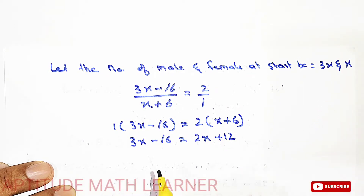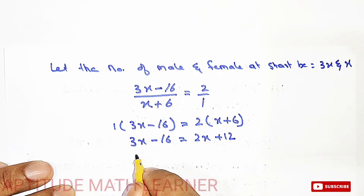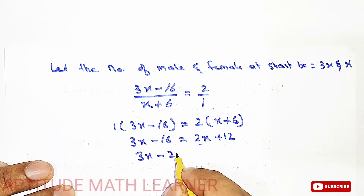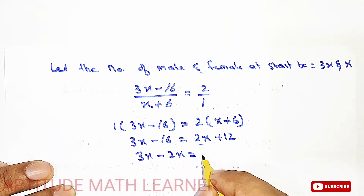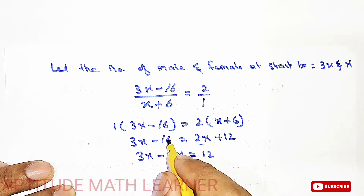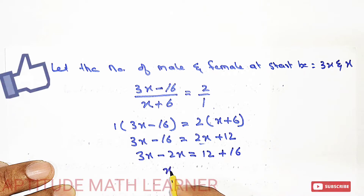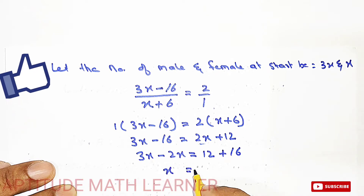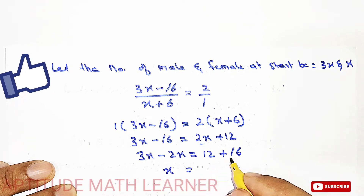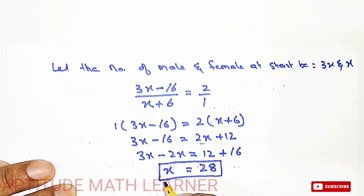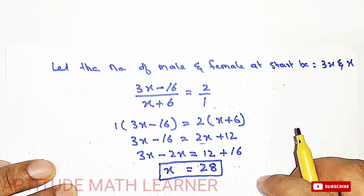Further solving: 3x minus 2x equals 12 plus 16, which gives x equals 28. So we have found the value of x.